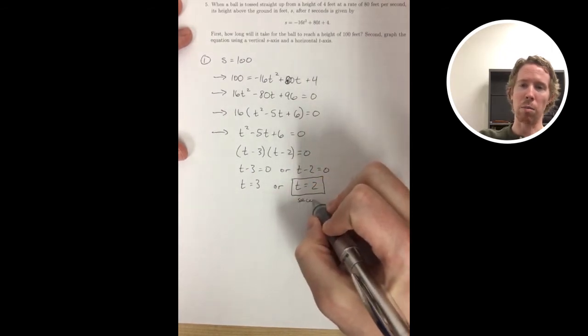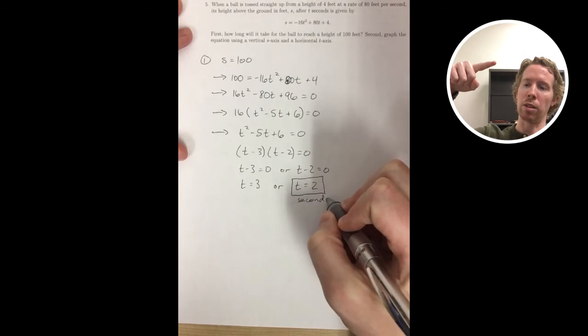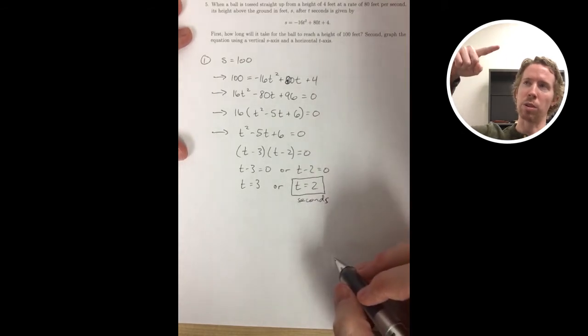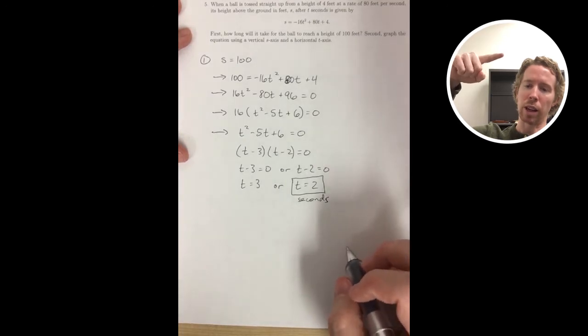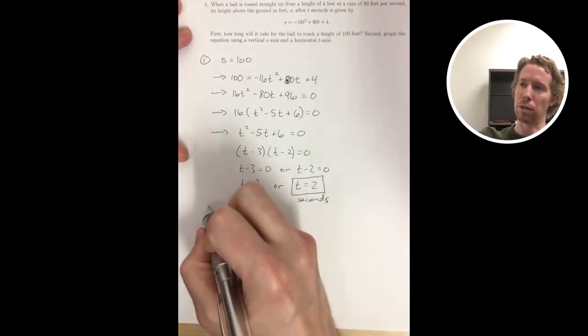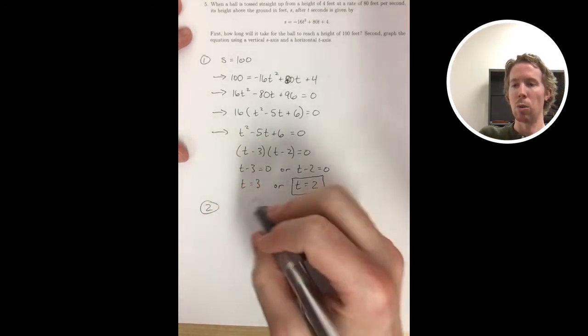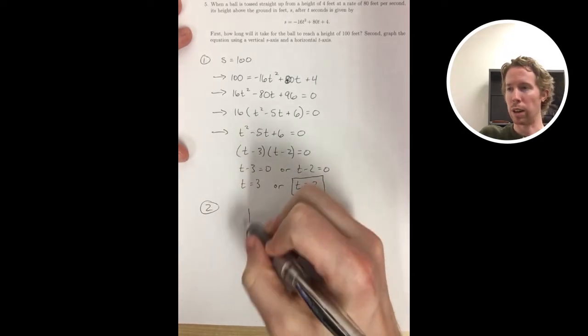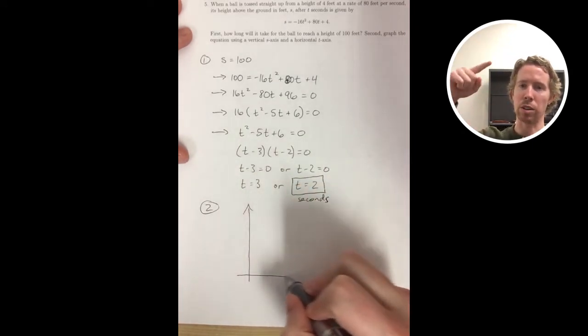And so what's happening is the ball goes up, and then after 2 seconds it hits 100 feet. It keeps going up, and then it comes back down. At 3 seconds it hits 100 on its way back down. What we were interested in was the 2 seconds, because that's when it first hits 100 feet.